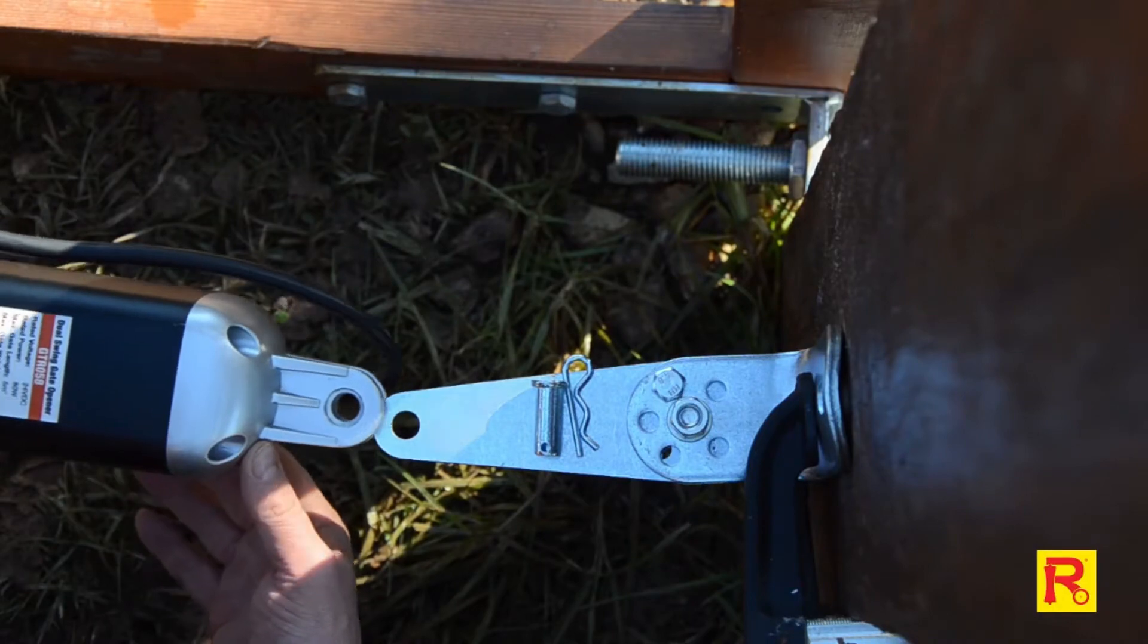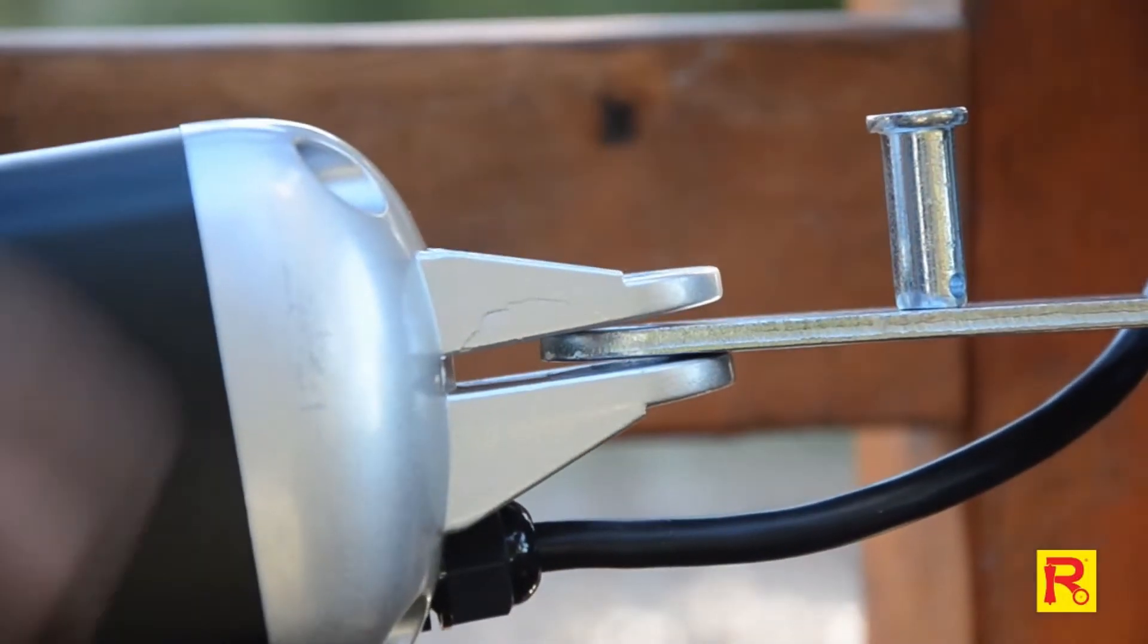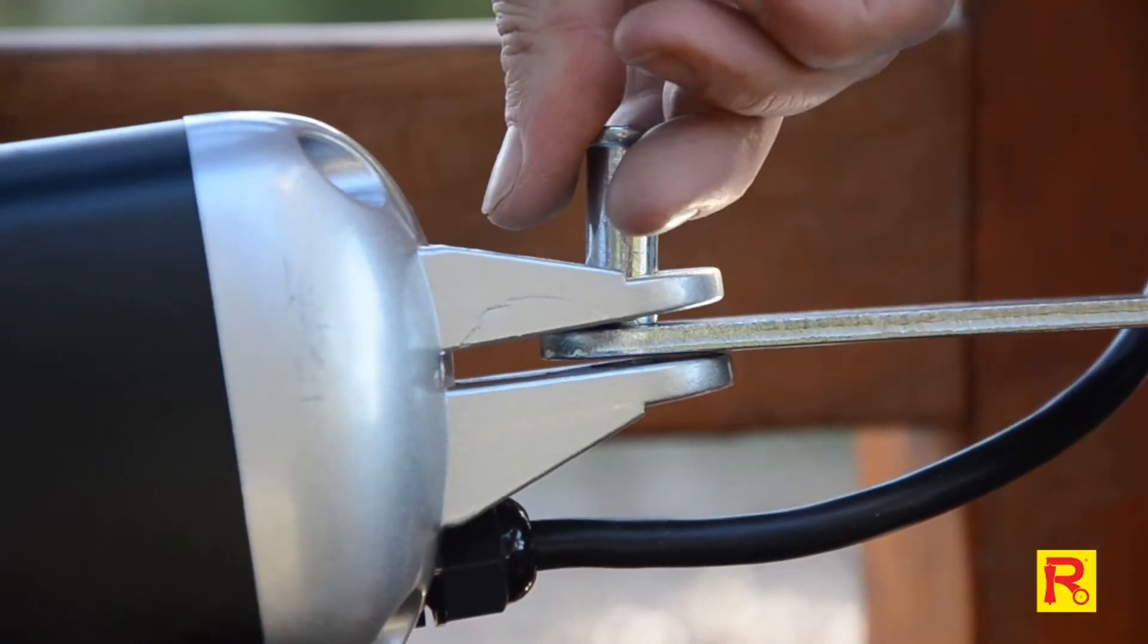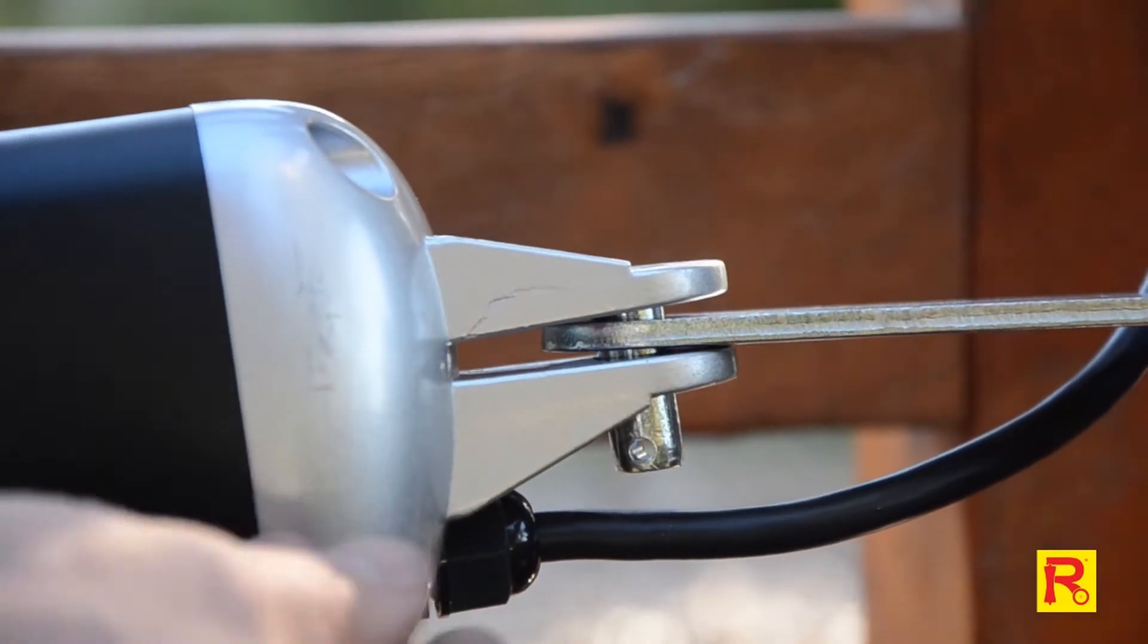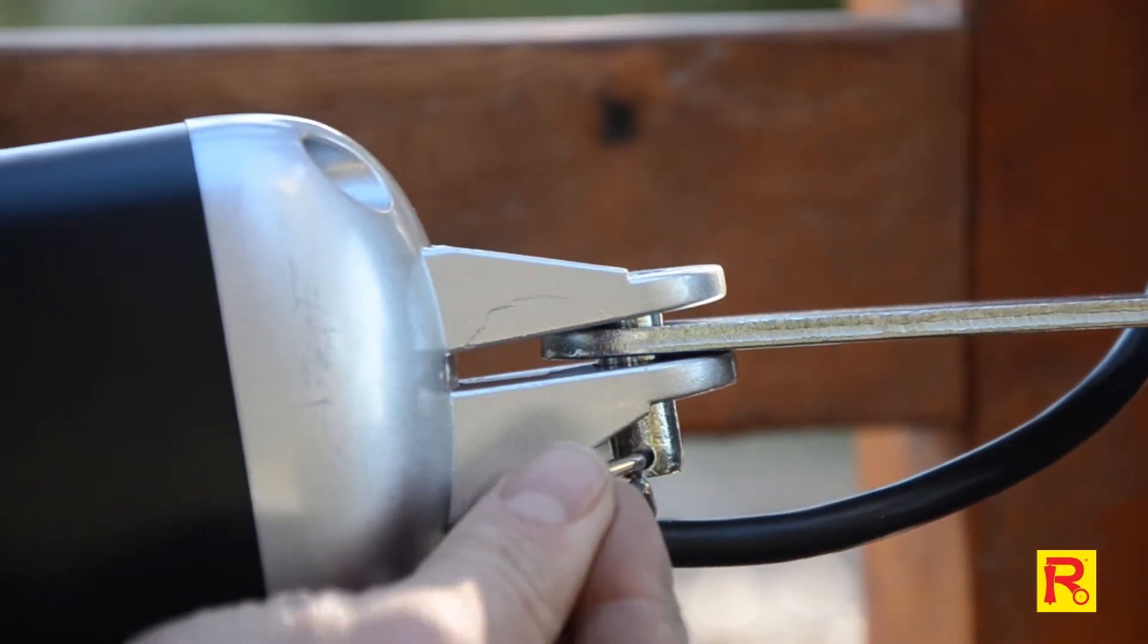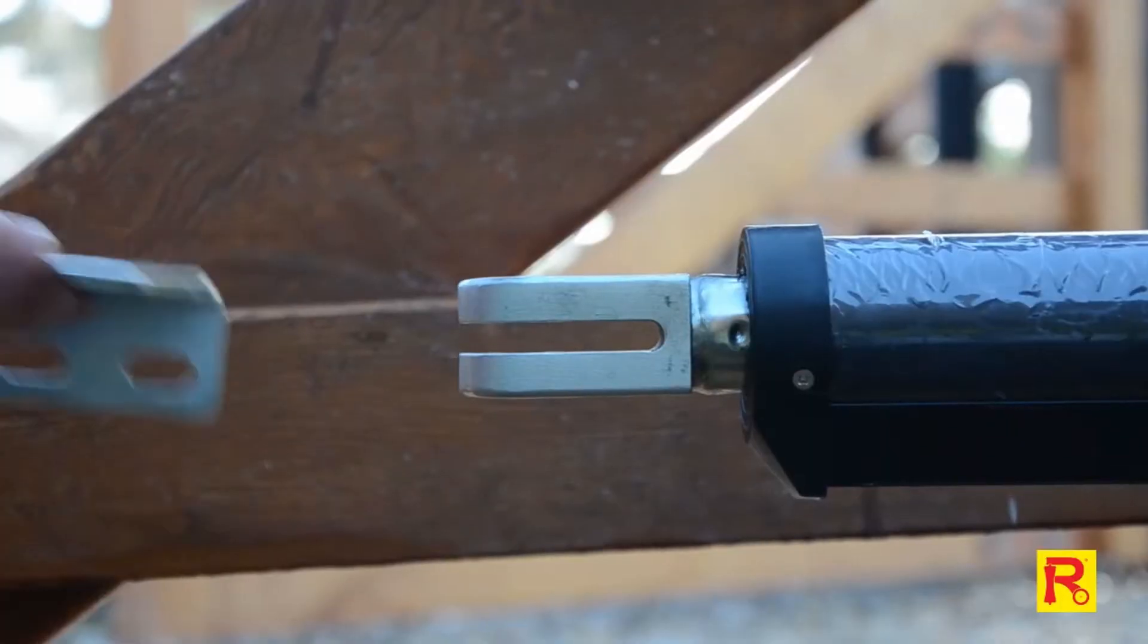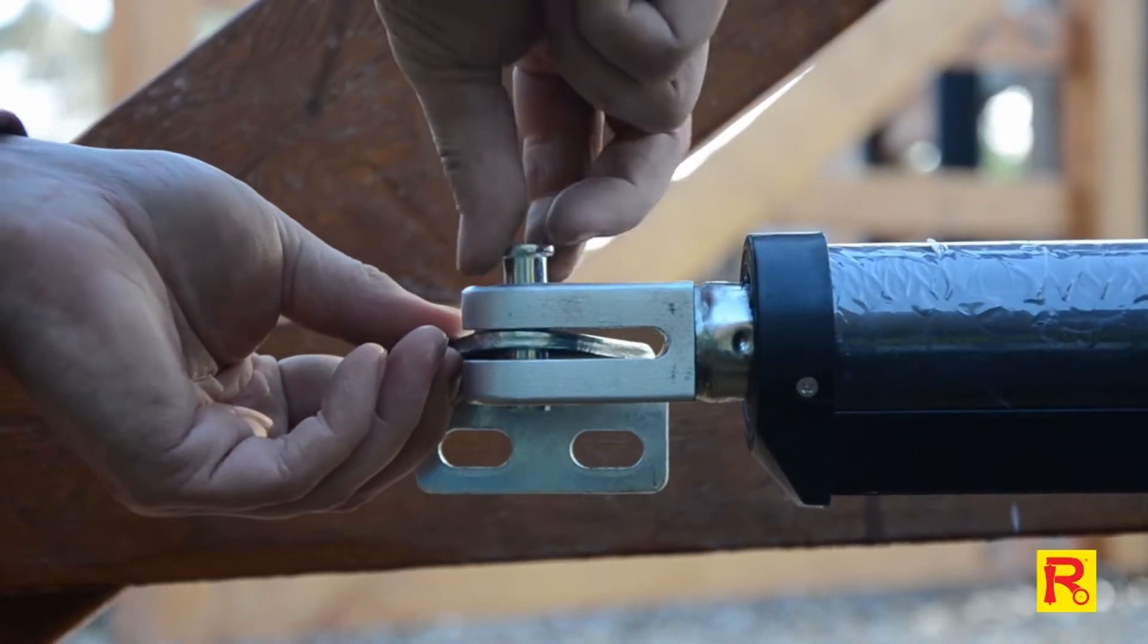Now, using the clevis pin, attach the assembled post pivot bracket to the gate opener arm. Use the supplied hairpin clip to hold in place. Attach the gate bracket to the opener arm using the same method.